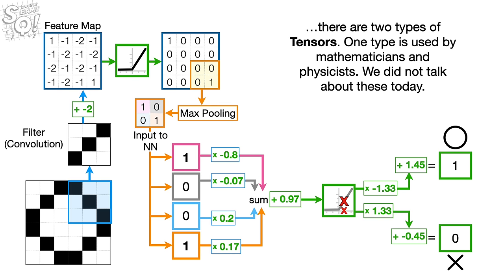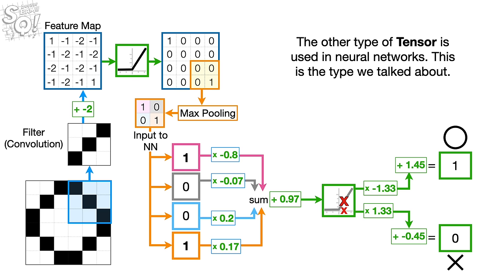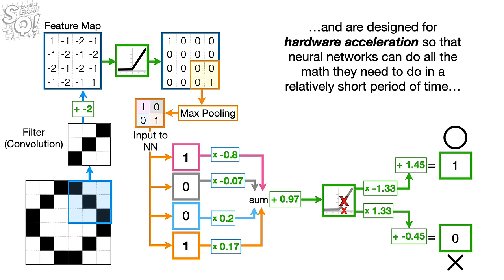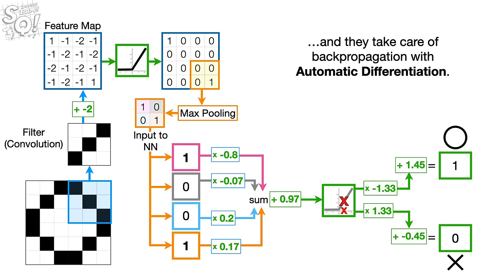In summary, there are two types of tensors. One type is used by mathematicians and physicists. We did not talk about these today. The other type of tensor is used in neural networks. This is the type we talked about. Tensors for neural networks hold the data and the weights and biases, and are designed for hardware acceleration, so that neural networks can do all the math they need to do in a relatively short period of time. And, they take care of backpropagation with automatic differentiation. BAM!